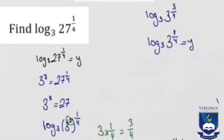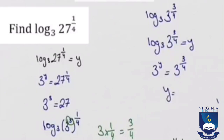To find y, we write it in exponential form again: 3 to the power of y equals 3 to the power of 3 over 4. Since the bases are the same, y is equal to 3 over 4.